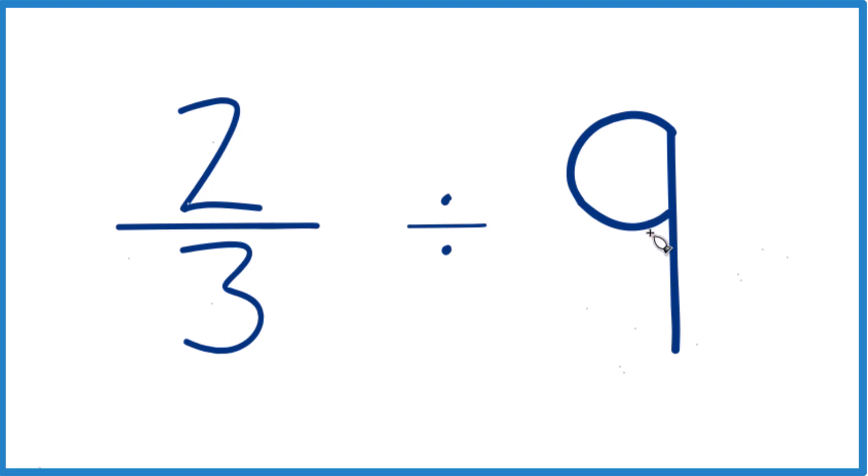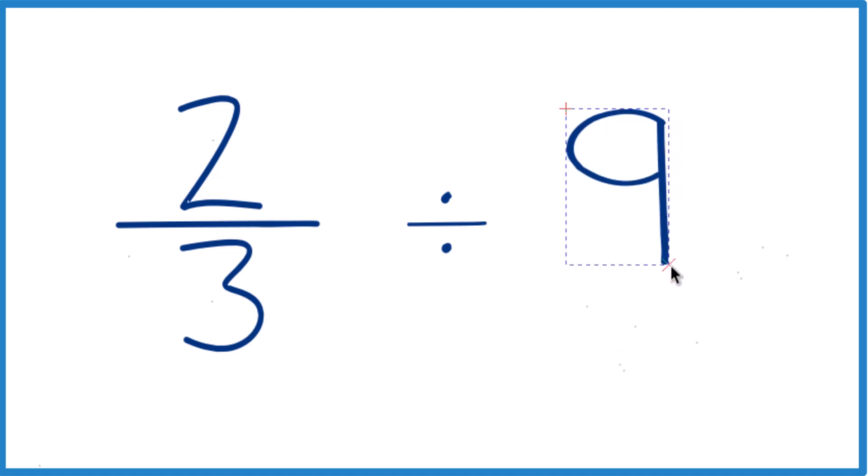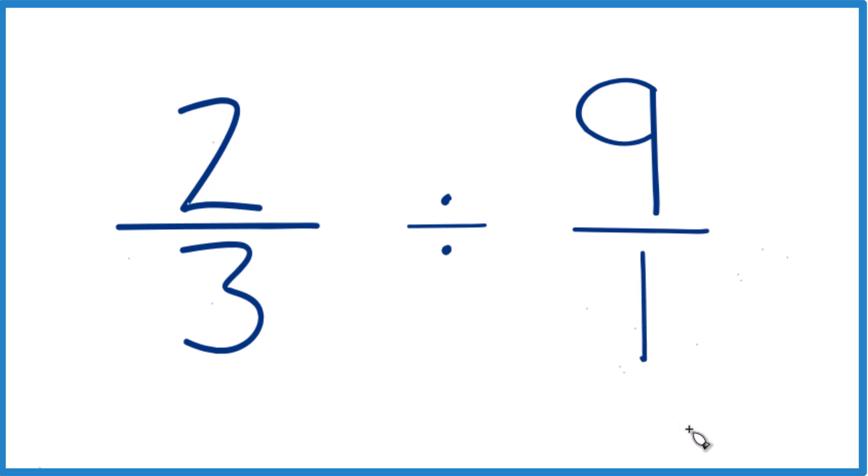Next, we're going to take the 9 here. Instead of 9, we're going to call this 9/1. 9 divided by 1, it's still 9,